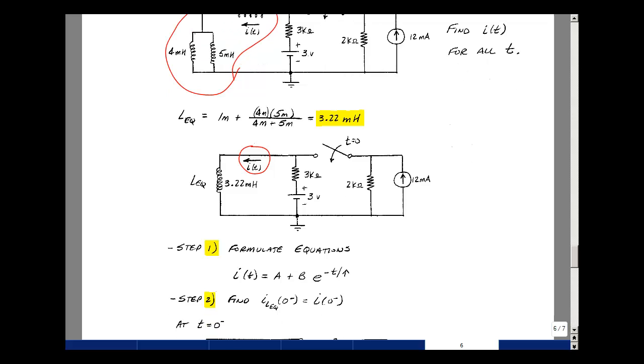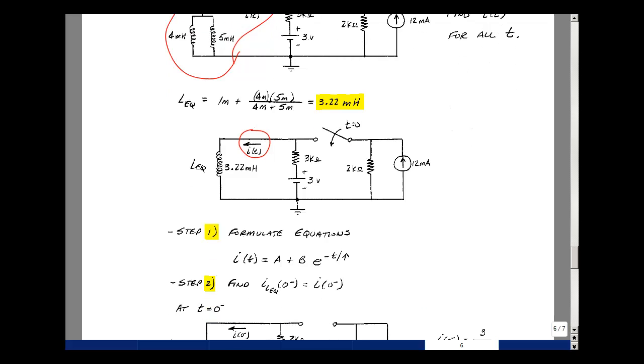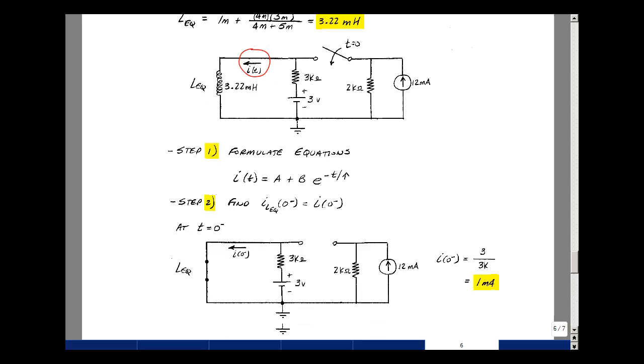We're going to do our six-step algorithm, so we'll formulate our equations. In this case it's just going to be I of t, it's going to be some a plus b times e to the minus t over tau, since I'm starting at t equals 0. Let's find the value of the current in the inductor just before the switch changes state, and that'll be the same after it does that.